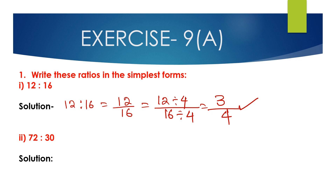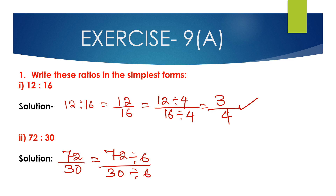Now question number 2nd bit: 72 is to 30. We can write 72 is to 30 as 72 divided by 30. Between 72 and 30, 6 is the common factor. Dividing the antecedent 72 by 6 and the consequent 30 by 6, we get 72 divided by 6 is 12 and 30 divided by 6 is 5. So 12:5 is the simplest form of the ratio 72 is to 30.